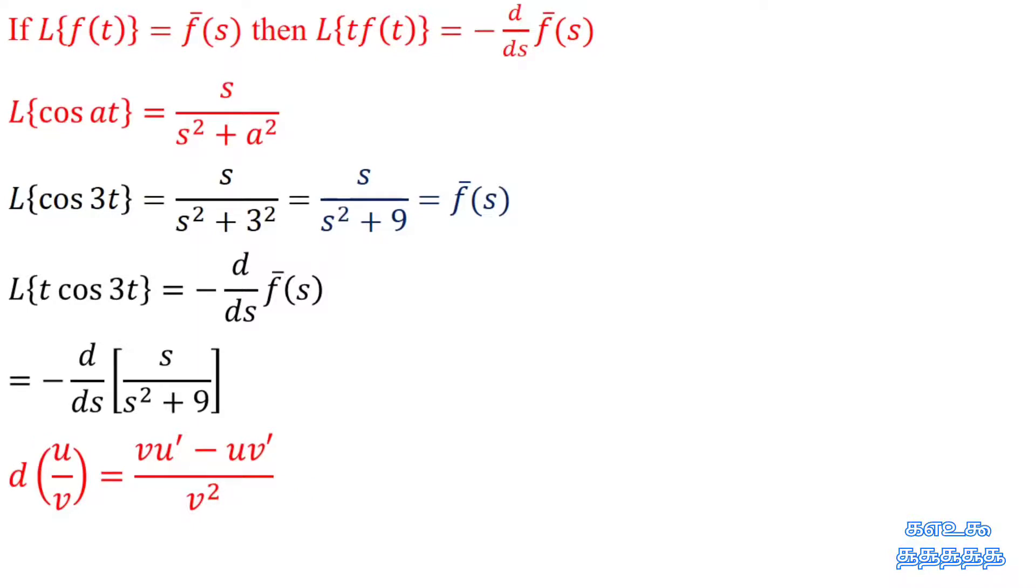Differentiation of u by v is equal to v into u dash minus u into v dash by v square.